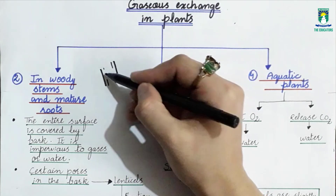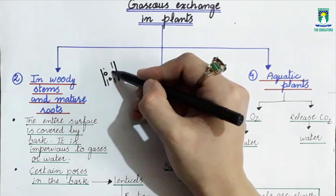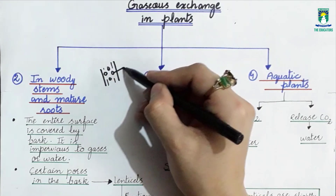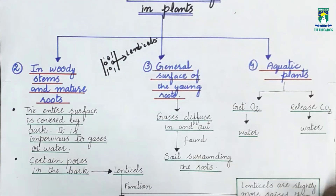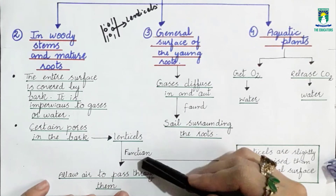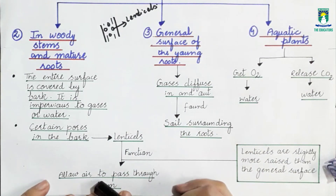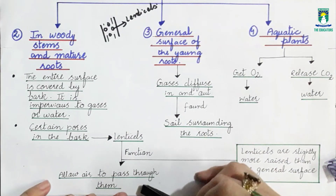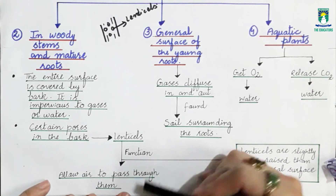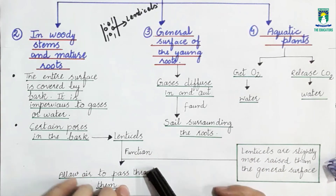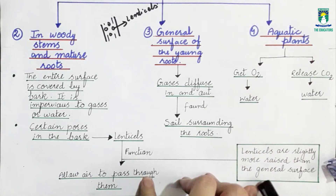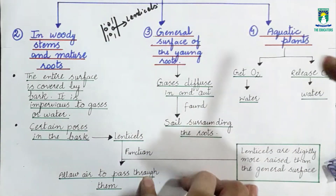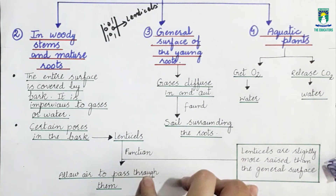In the upper surface layer of the bark, there are certain pores and holes present which we call lenticels. The function of lenticels is that they allow air to pass through them and facilitate gaseous exchange. A second feature of lenticels is that they are slightly raised or bulging from the surface, and you can easily observe them.